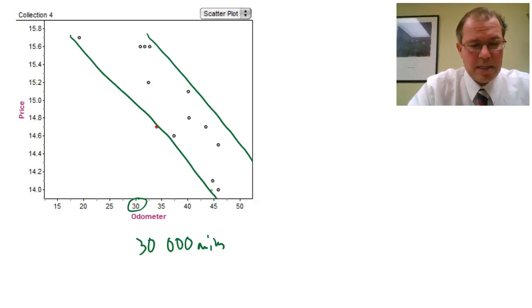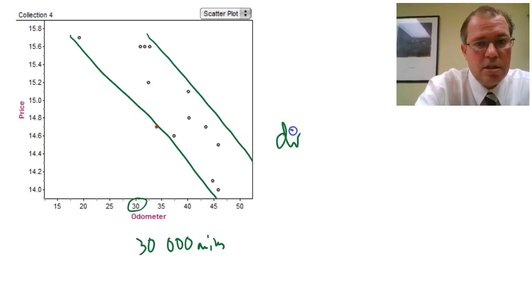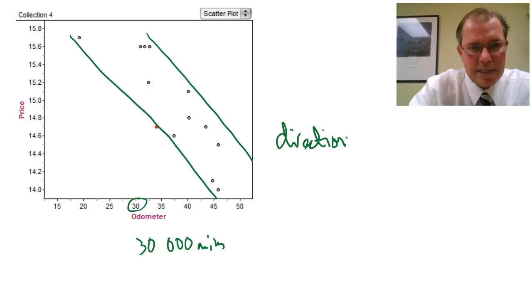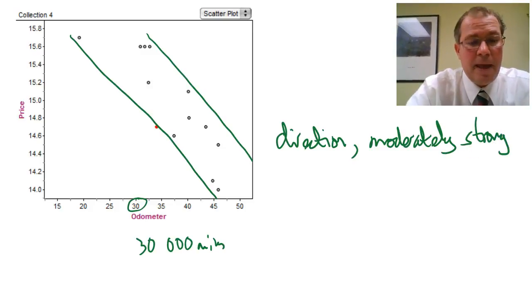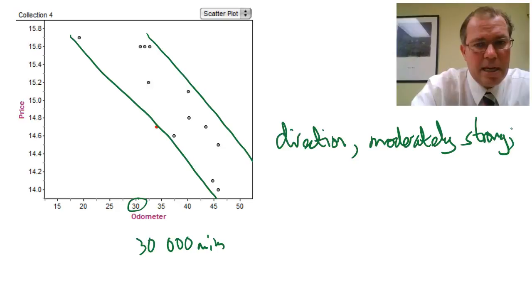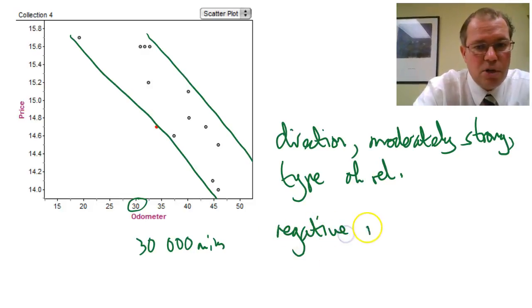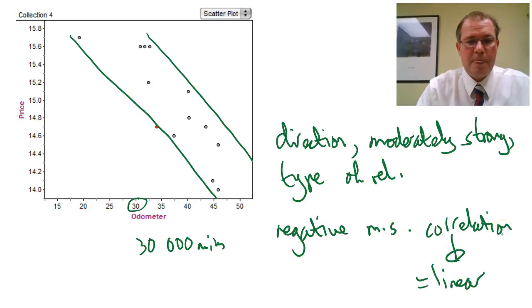So whenever you describe a scatter plot, you need always three things. The direction. In this case, it's negative. It's going down. The strength of a relationship. Well, there are other ways to measure strength, but for now I'm going to say it's moderately strong. But you will learn other ways to measure the strength of a relationship. And what type of relationship? Is it linear? Is it curved? This one is definitely linear. So you can actually say it's a correlation. The type of relationship. So here I would say negative. That's the direction. Moderately strong. Correlation. And as soon as I use the word correlation, I mean linear. Correlation means it's a linear relationship.